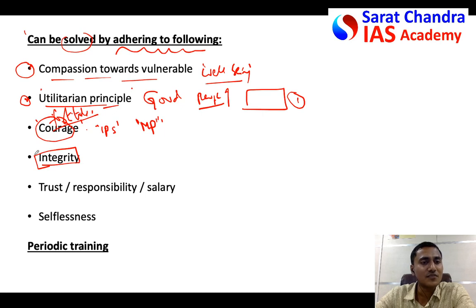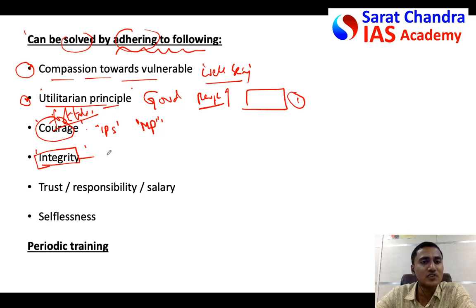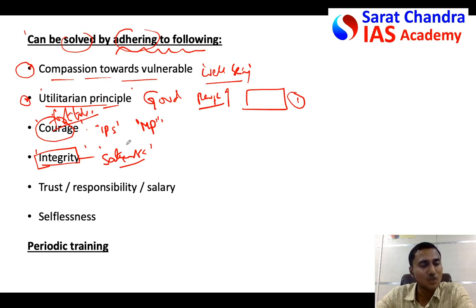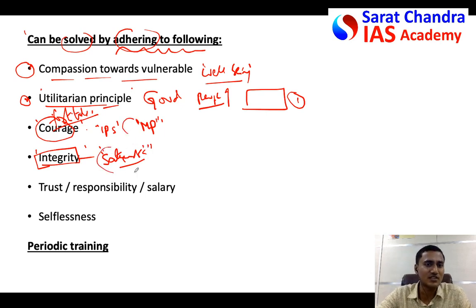Similarly, integrity: public servants who adhere to integrity follow ethical principles in any situation, and their actions are predictable. You can cite the example of Indian Engineering Service officer Satyendra Nath Dubey, who was working on the Golden Quadrilateral project. He found corruption and escalated it all the way to the Prime Minister's Office, despite receiving threatening calls from the mafia and local contractors. He still followed the ethical conduct and risked his life in that process. Note: you don't always need extreme examples — personal life examples work too.